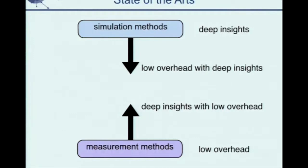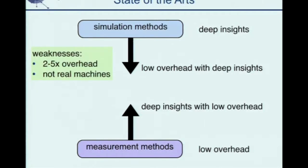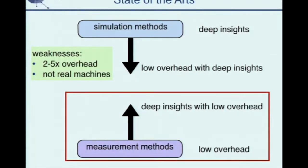The simulation method has two intrinsic weaknesses. First, although it tries to reduce overhead using software sampling, the overhead is still not low enough — typically two to five times slowdown. Second, it's based on a simulator, not a real machine. For complicated architectures and memory hierarchies, it's really not easy to simulate. So we focus on building performance tools using the measurement method to see whether we can get deep insight with low measurement overhead.